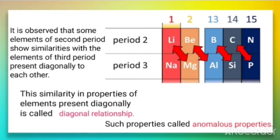Anomalous properties refer to the behavior where second period elements show similarity to their diagonal element rather than to their own group members. For example, lithium, instead of showing similarity to sodium, shows similarity to its diagonal element magnesium. Beryllium, the first member of Group 2, instead of showing similarity to magnesium, shows similarity to its diagonal element aluminium. Such relationships between diagonal elements are called diagonal relationships.